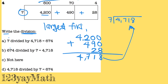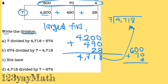And this is going to be your quotient. So you're going to add it up: 600 plus 70 plus 4, so 4, 7 — 674.